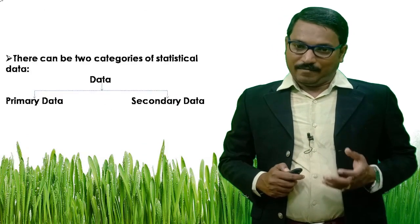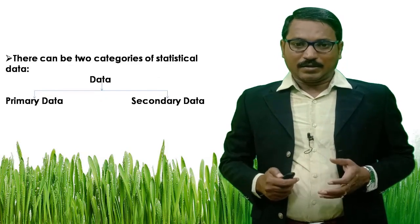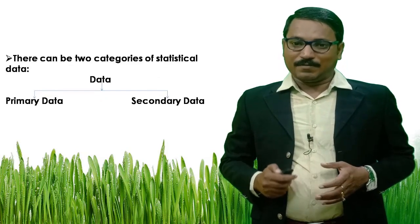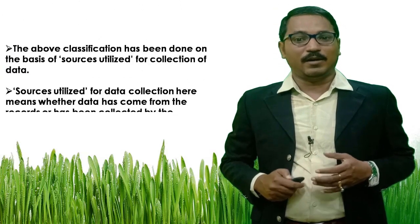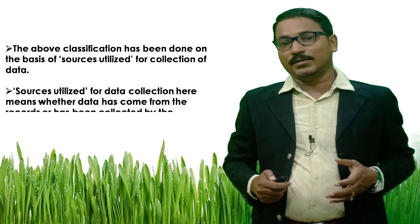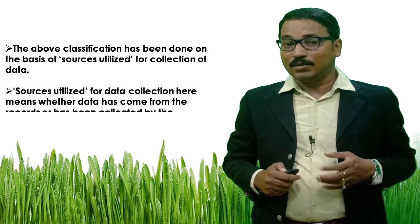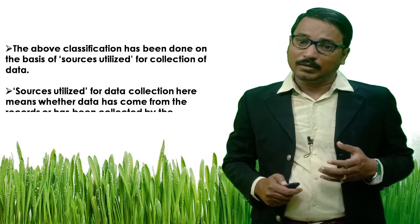Now, how many types of data can there be? There are two categories of statistical data: primary data and secondary data. This classification has been done on the basis of sources utilized for collection of data — meaning whether the data has come from existing records or has been collected directly by the researcher.